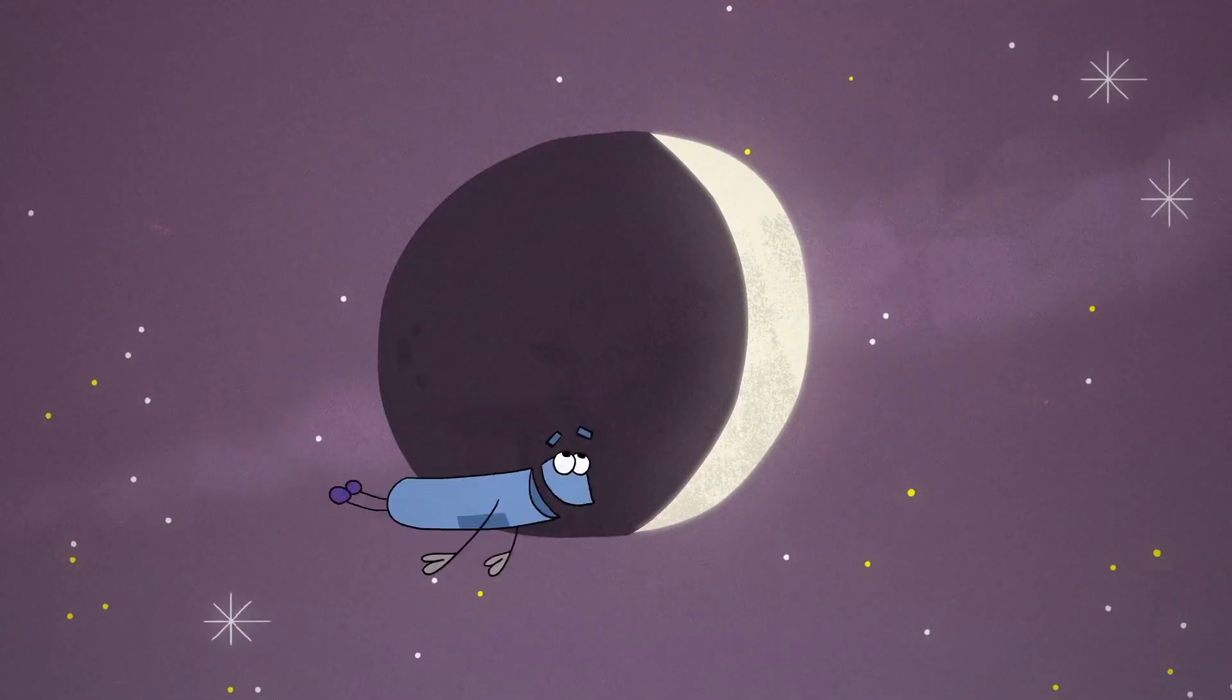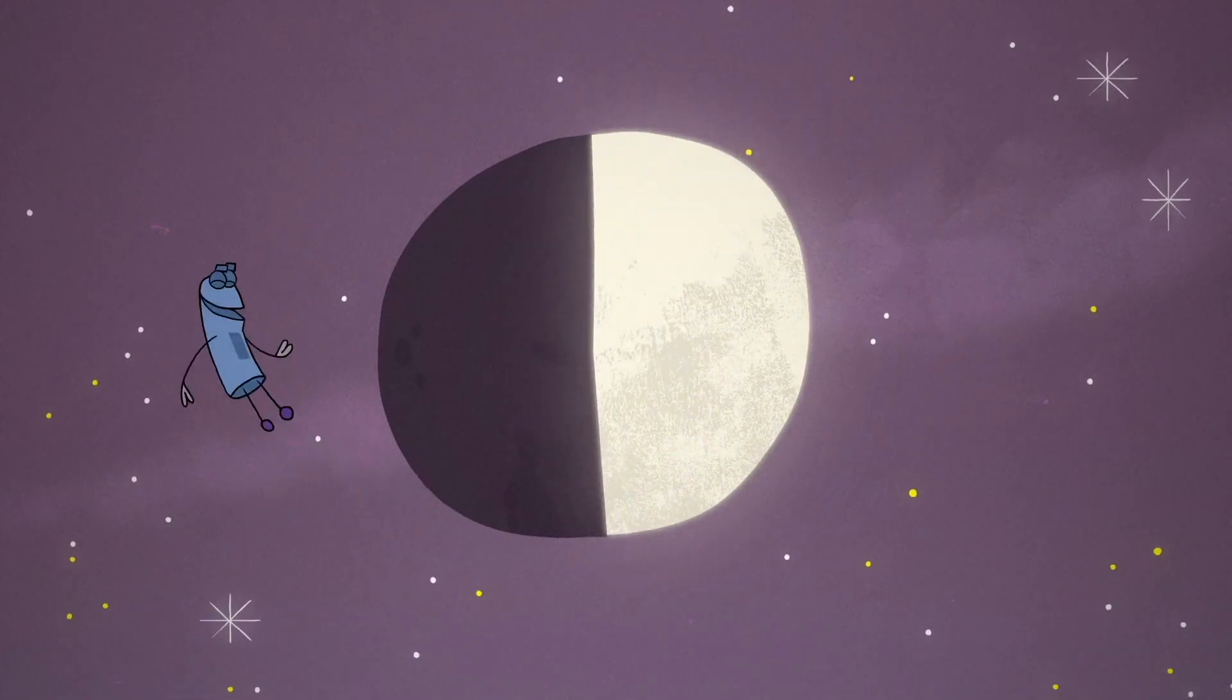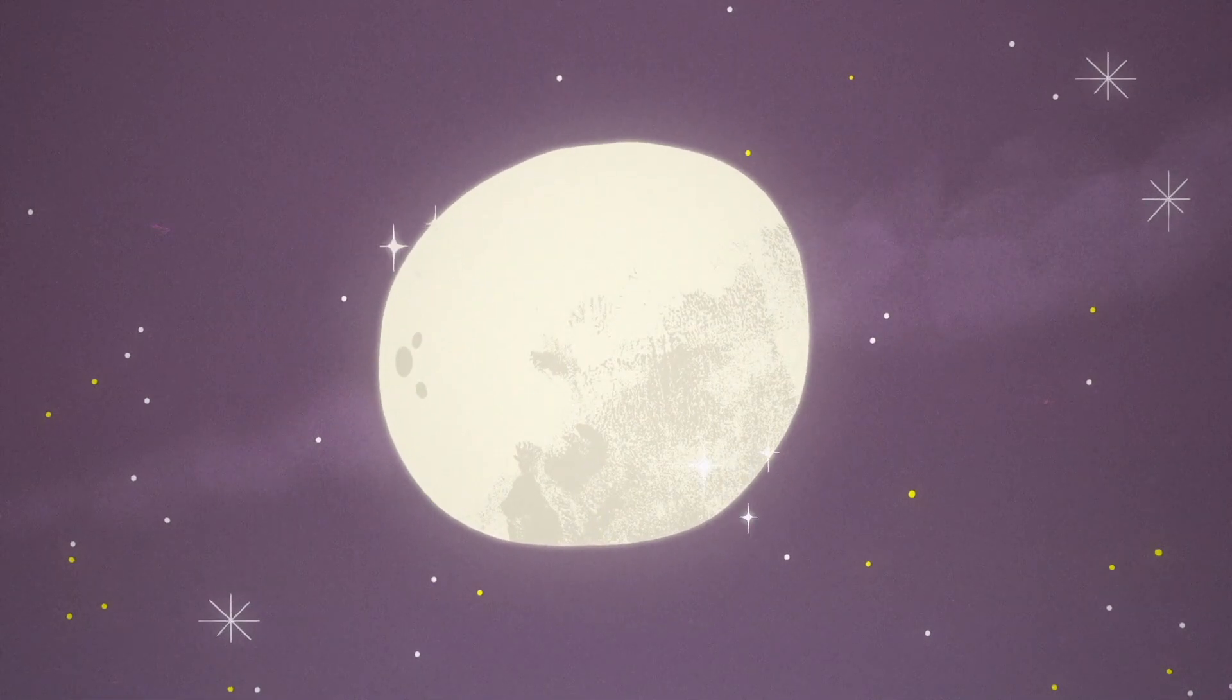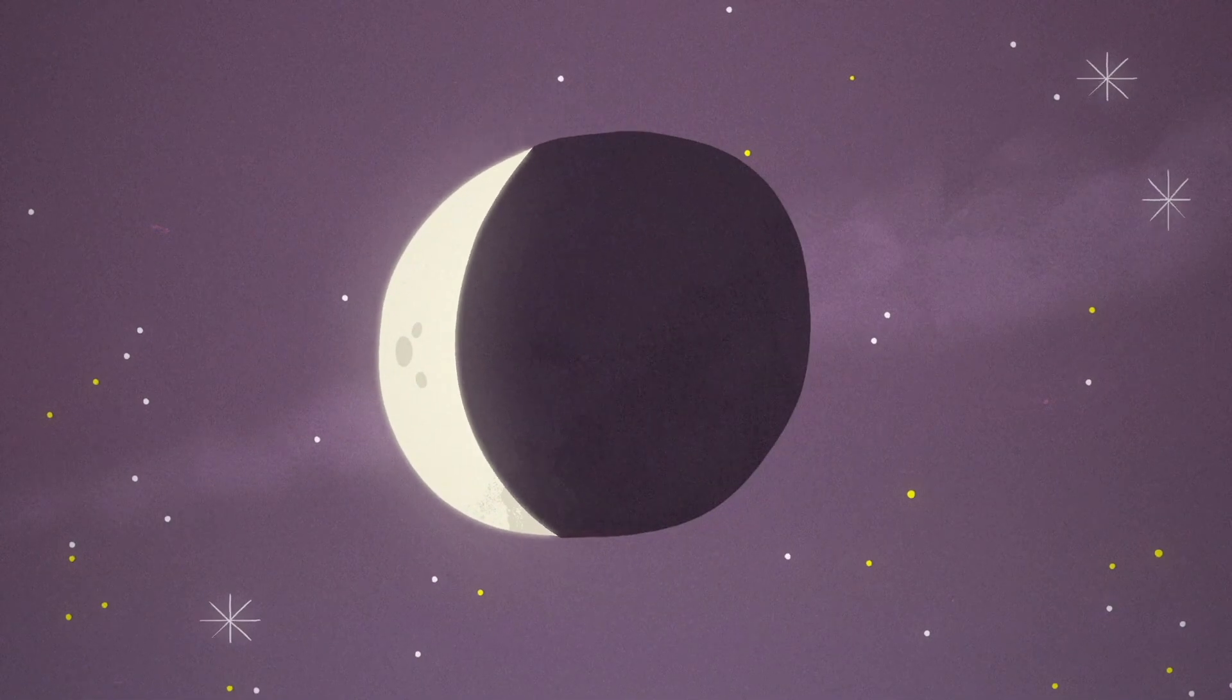It may look like a crescent shape, but soon it appears to be a half moon, until at last it's full and round. Then night by night it shrinks back down.